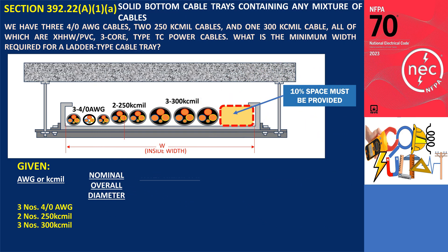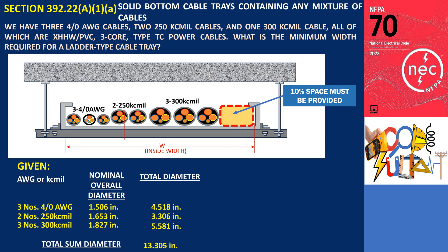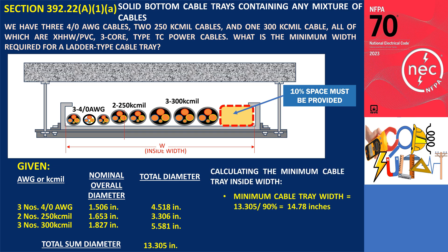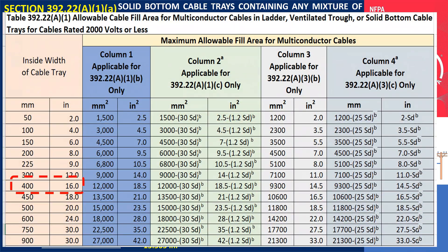The first step is to determine the nominal diameter of each cable, which can be found in the catalog data. The nominal diameter for the 4-aught AWG cable is 1.506 inches; since there are three of these cables, their total diameter is 4.518 inches. For the two 250 kcmil cables, the nominal diameter is 1.653 inches, giving a total diameter of 3.306 inches. The nominal diameter for the 300 kcmil cable is 1.827 inches, giving a total of 5.481 inches. Adding these together, the total diameter of all the cables is 13.305 inches.